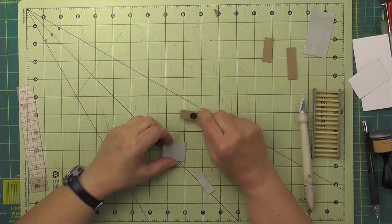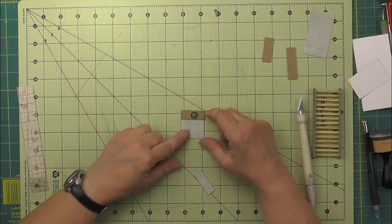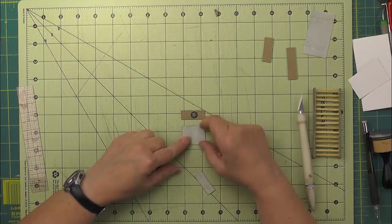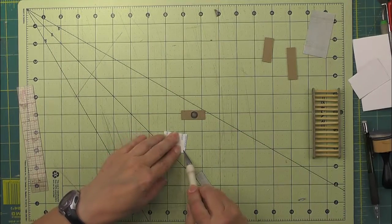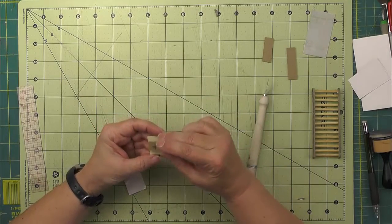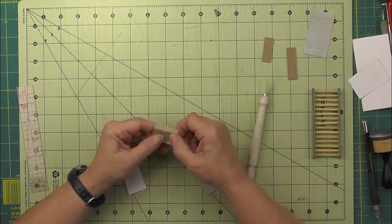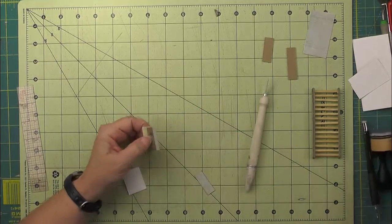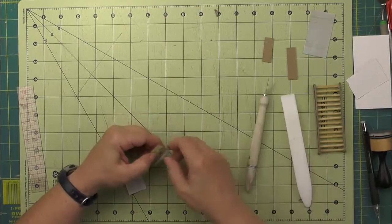So to cover this piece that has the magnet, I've got a piece of patterned paper that is the same width as my piece of chipboard. And I've cut it just a little over an inch. And what I want to do is place the magnet side in the center. And then I can wrap these edges around.